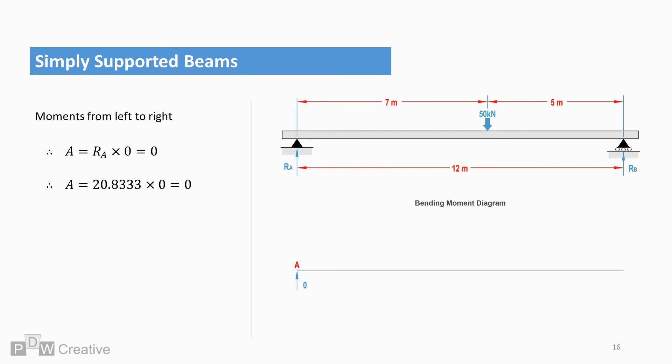At point A, we observe the reaction force from the holding pin. So RA times 0 at length is used, 0 because we have not moved from the end. So RA times 0 is 0.